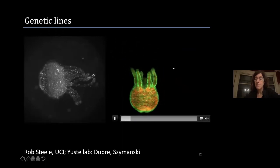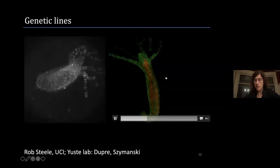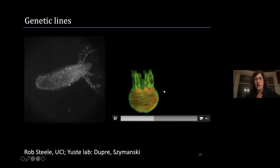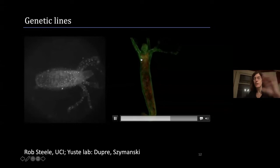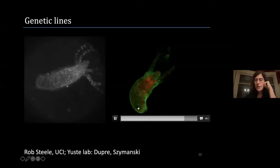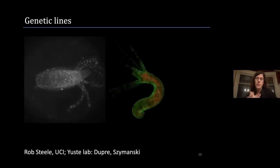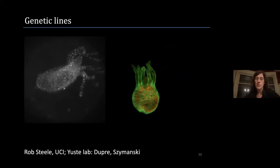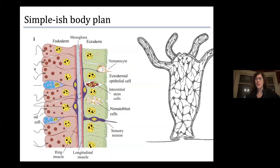In addition to the neural GCaMP line, we also have GCaMP muscle lines, so we're able to image calcium activity not in the neurons but in the muscle cells themselves. In this particular example, one line has green GCaMP in the outer layer and RCaMP — a red calcium indicator — in the inner layer. As I'll show in a moment, Hydra consists of basically two layers, and we can track muscle activity in both of those layers, giving us a huge amount of information about the dynamics of the cells making up the behavior.